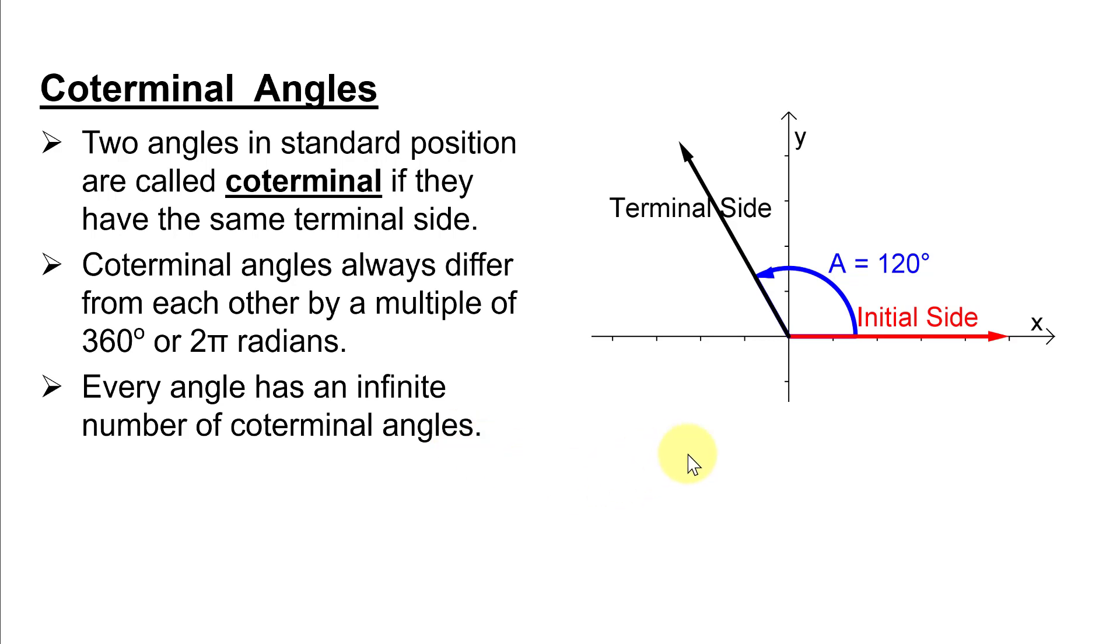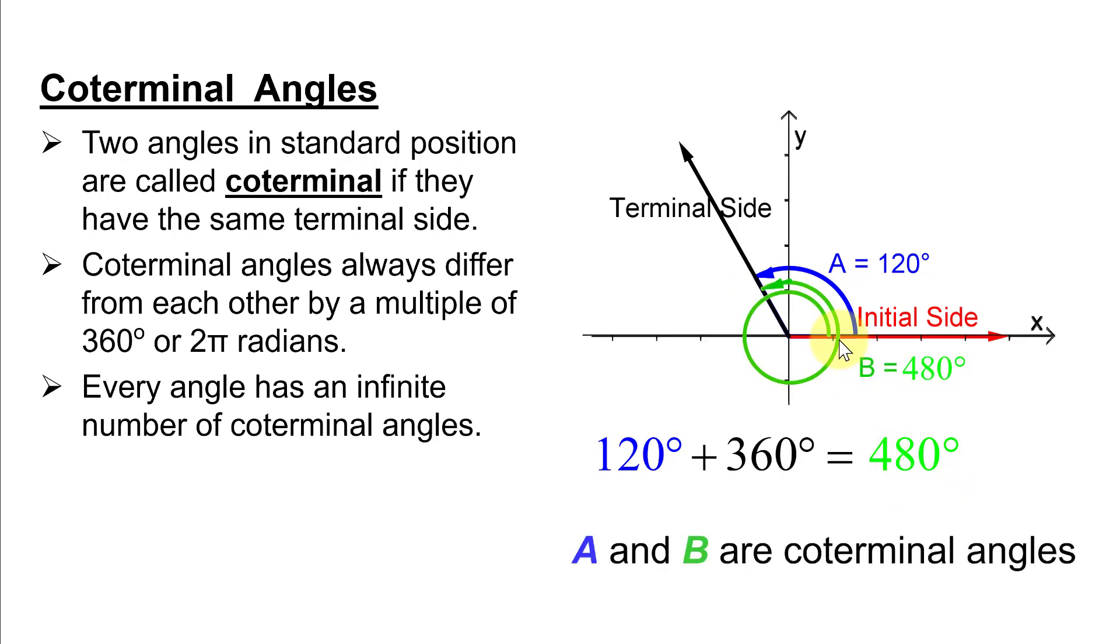So let's look at a couple of coterminal angles for 120 degrees. Let's add 360 to it. We get 480 degrees. And how would we graph that? It's one complete revolution plus 120 degrees. So that is the way we will graph the angle 480 degrees, which is coterminal with 120 degrees.